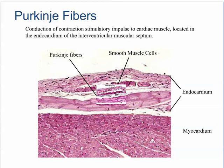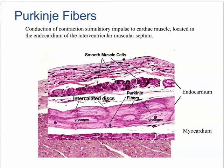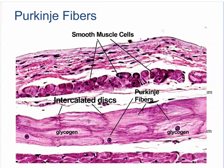The peripheral distribution of myofibrils and glycogen can be seen better in this higher magnification. The purpose of so much glycogen is not known; however, some investigators suggest the Purkinje fibers generate energy to maintain themselves by way of a carbohydrate metabolism.